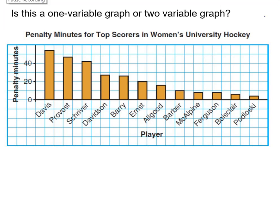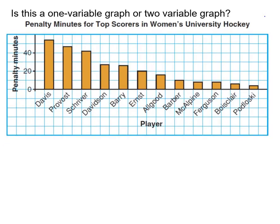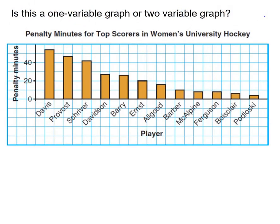Actually, it is one variable data. We only have really one number that's changing, and this number is right here. This number is changing. Well, on the x-axis, on the horizontal axis, there's no numbers that are changing. There are just names of the players on the hockey team that were left penalties. So this is a graph that represents one variable.